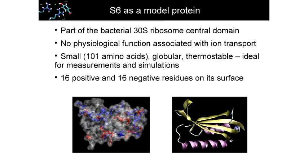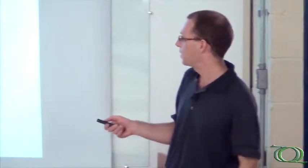To study these salts, I use the model protein, the S6 ribosomal protein. It's part of the 30S ribosomal unit of bacteria, and it has no physiological function associated with ion transport. That's important, because if I want to study interactions between ions and proteins, I don't want to have a protein that already interacts with specific ions. I want something that does not have any role in ion transport, and that's one example. It's very nice because it's small, it's globular, it's thermostable, so it's ideal both for measurements and for simulations. One other plus is that it has 16 positive and 16 negative residues on its surface. You see them here: in red are the negative, in blue are the positive. So there are a lot of interaction sites, a lot of sites that can bind these salt ions.